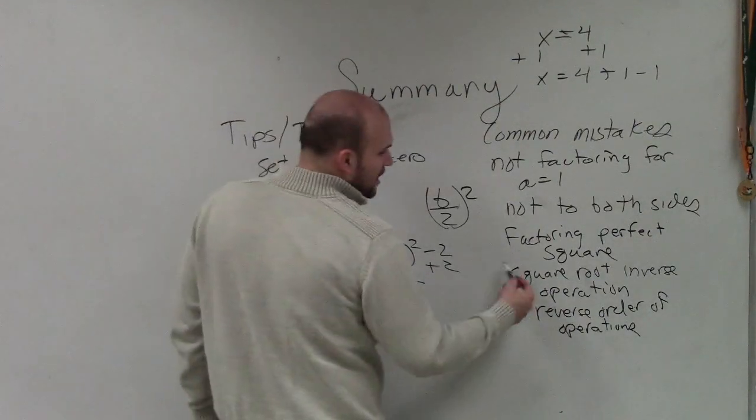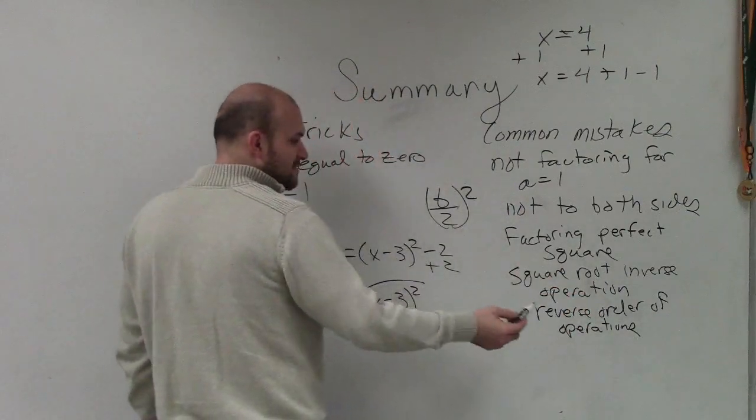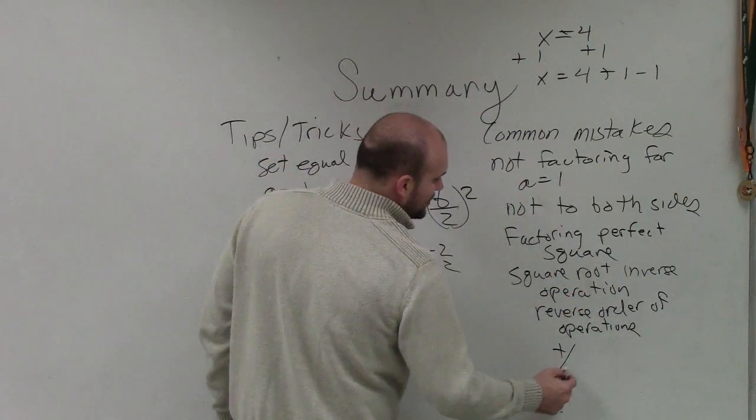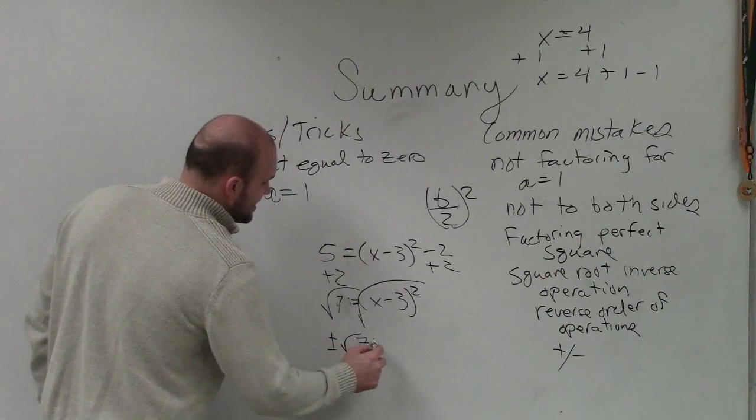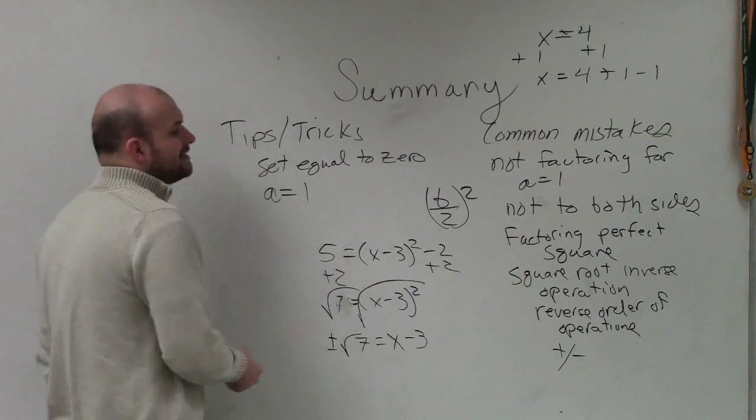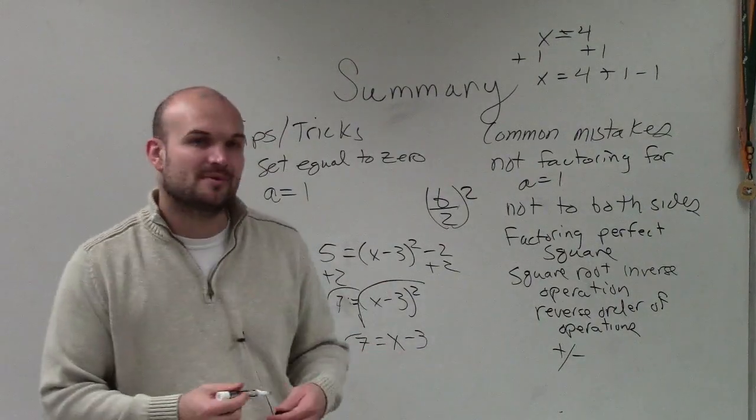Now when you take the square root, which is your inverse operation, you have to make sure you include the plus and the minus. So therefore, it's going to be plus or minus the square root of 7 equals x minus 3. Then I can add the 3 to the other side. And that's how I'd solve my equation.